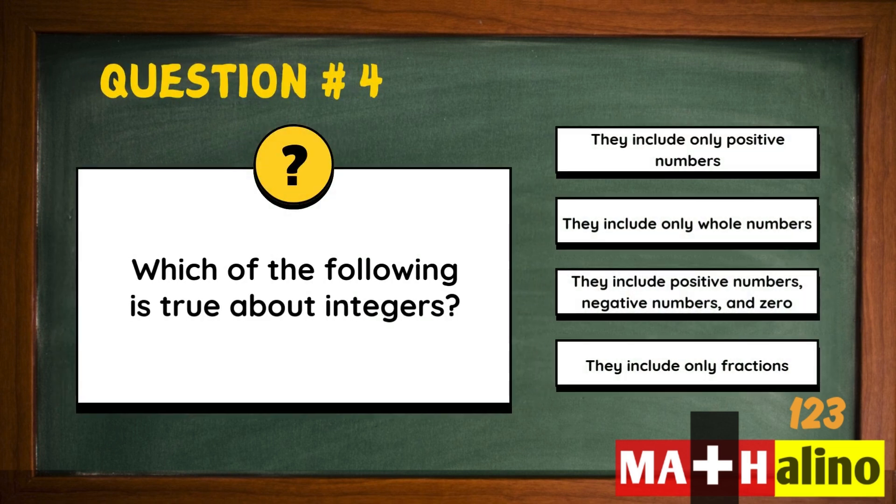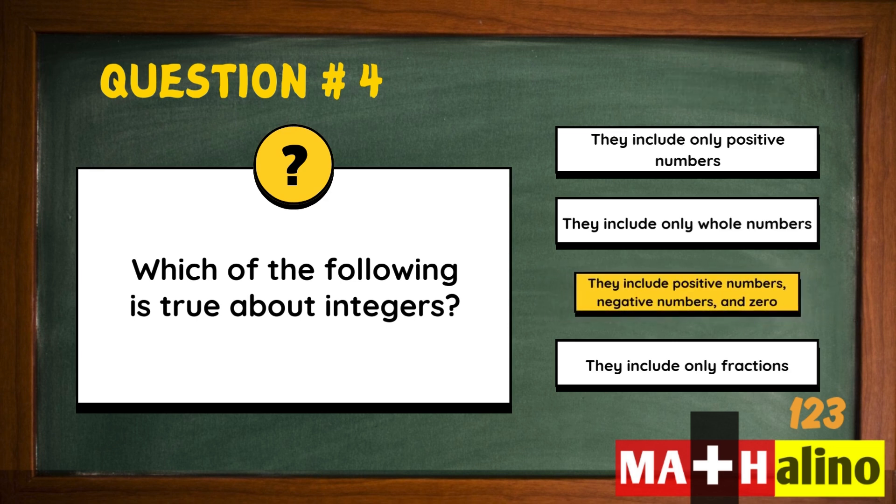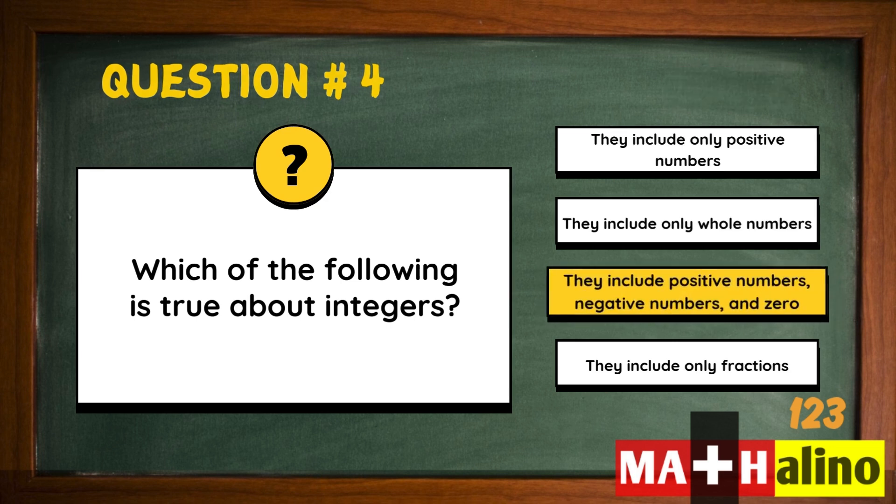Which of the following is true about integers? They include positive numbers, negative numbers, and zero.